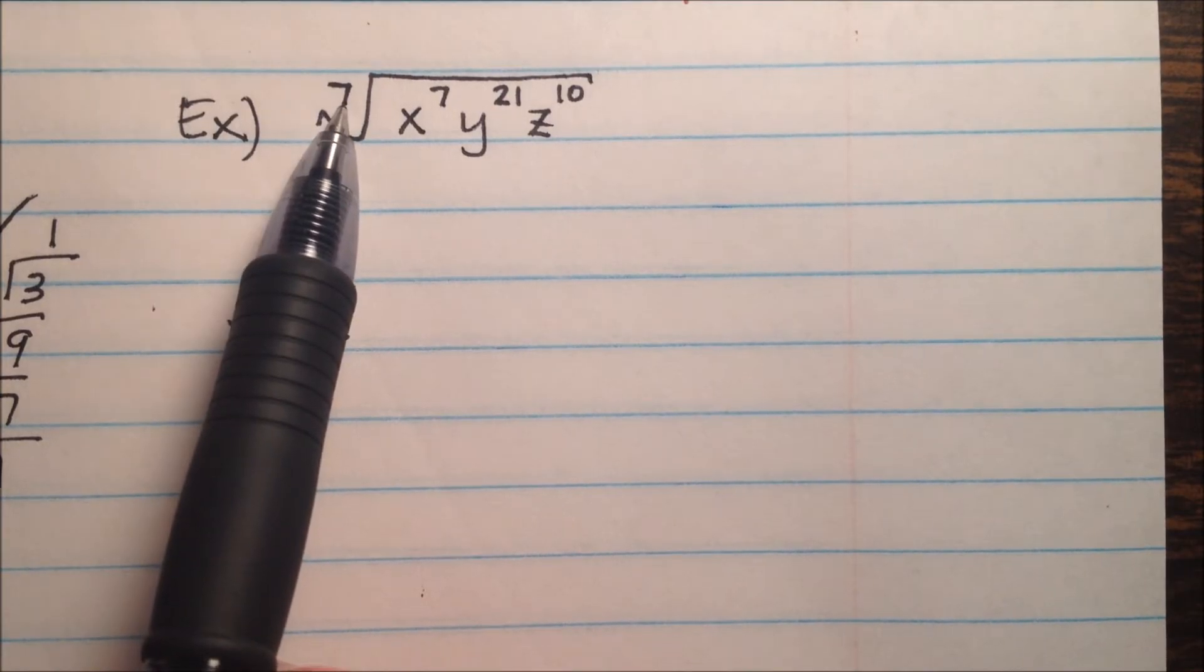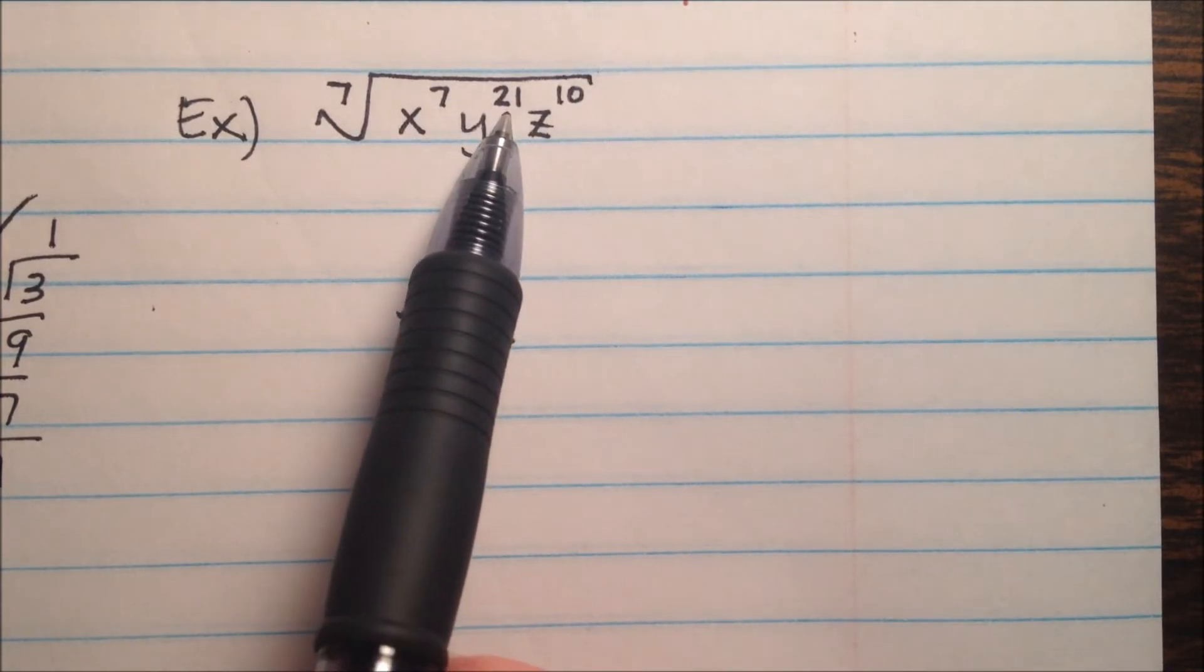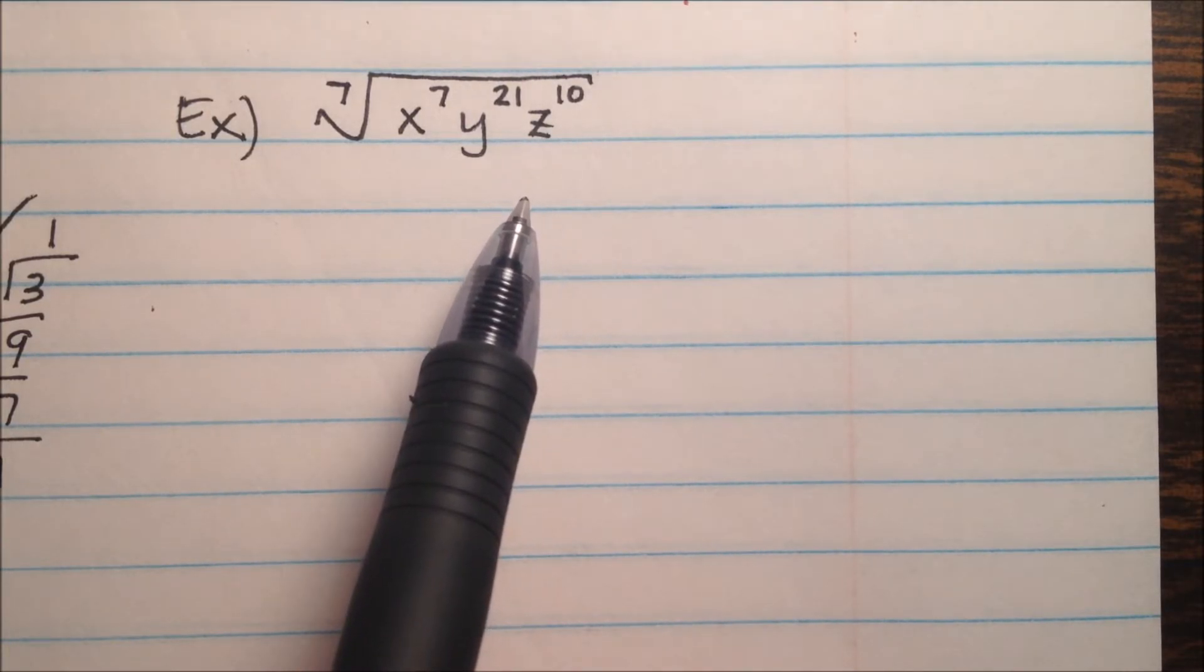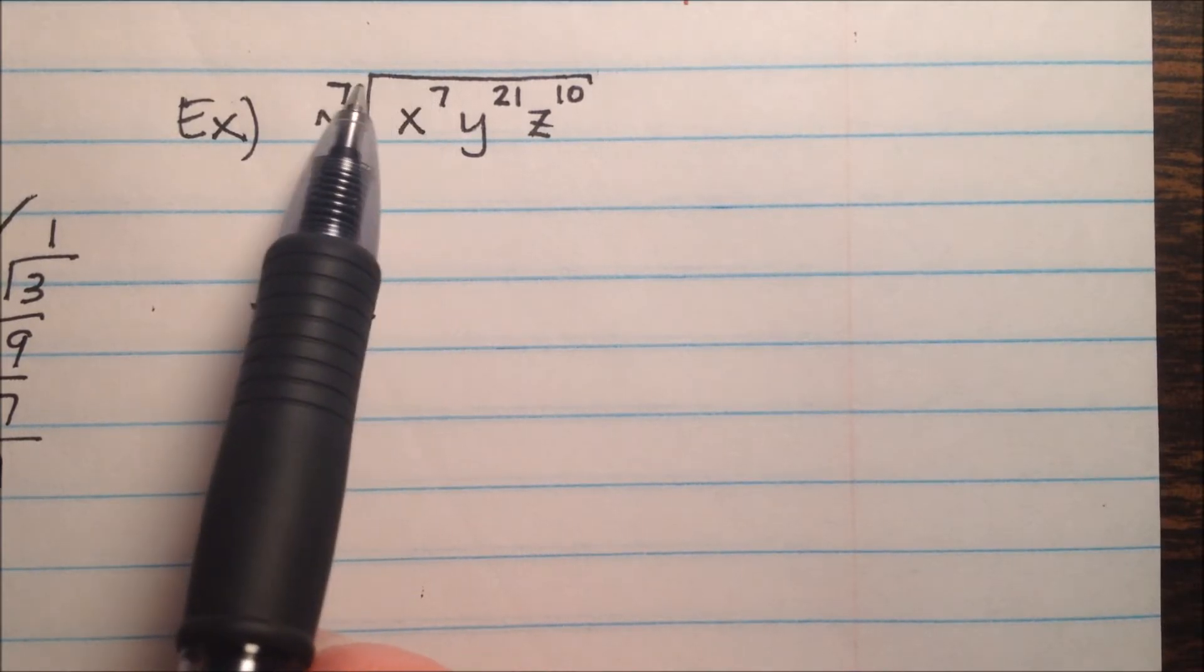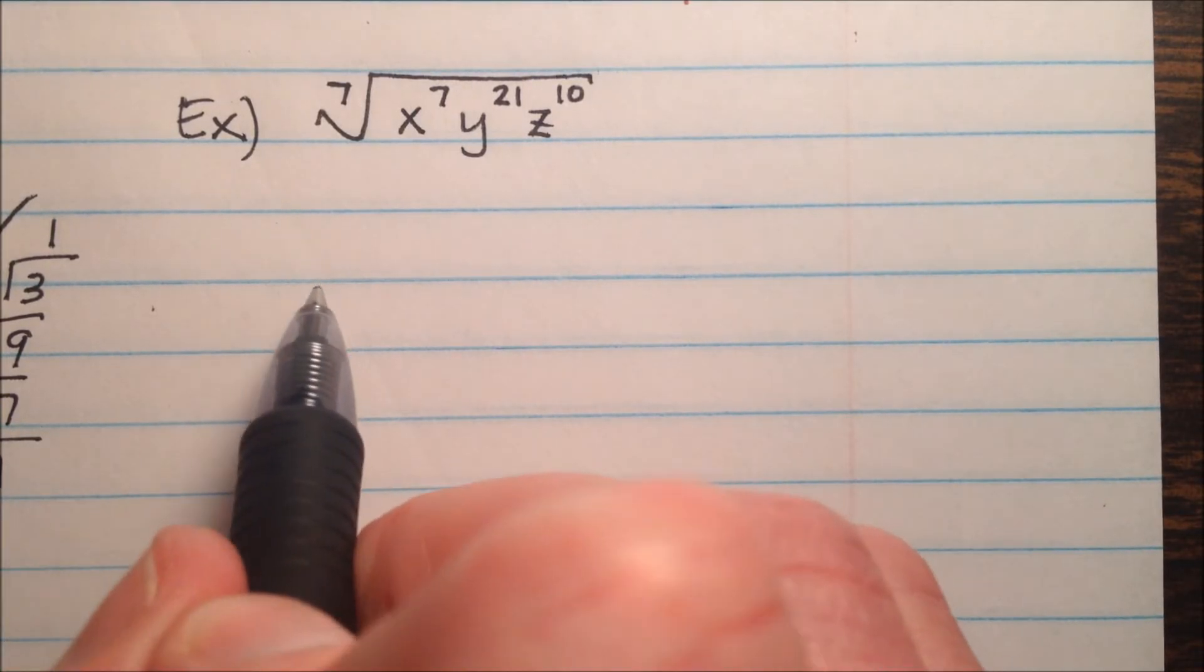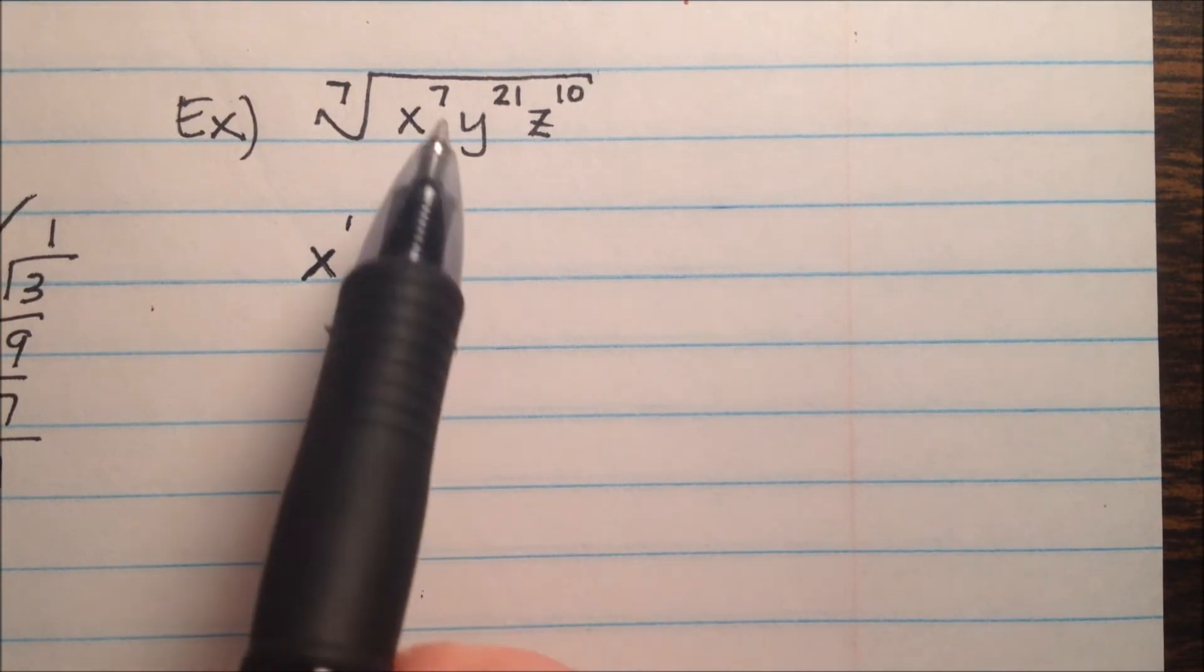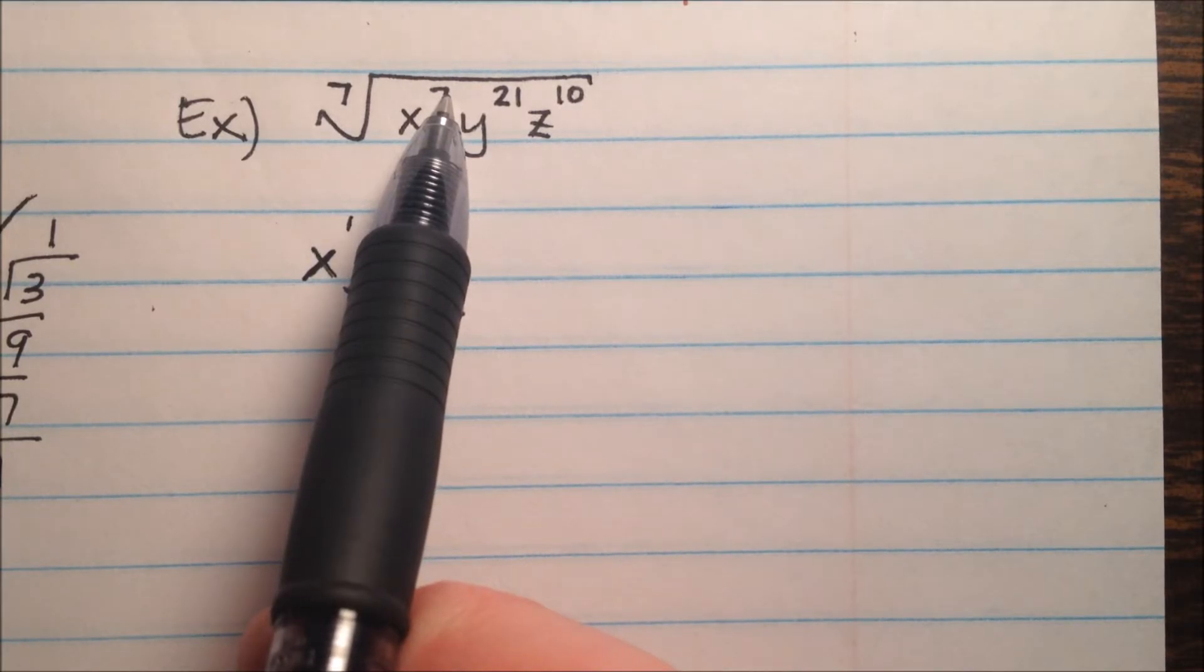In this case, we're taking the 7th root of a lot of variables, x to the 7th, y to the 21st, and z to the 10th. Okay, so using the rule that we just kind of talked about, we're going to divide by this index. So 7 divided by 7 makes 1. So on the outside, there'll be x to the power of 1. And there was no remainder, this 7 divided this 7 evenly, so that's it.